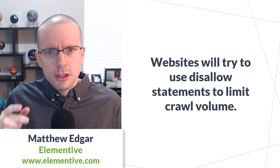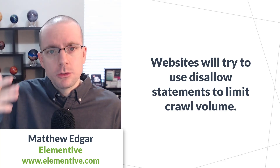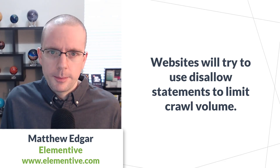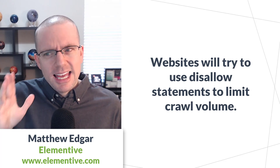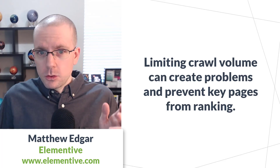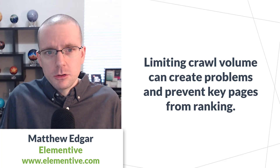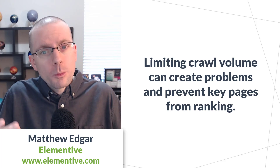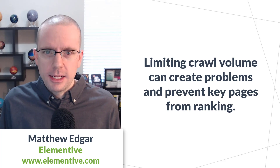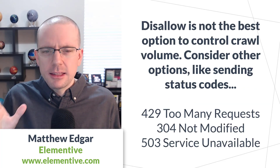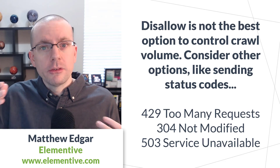Another scenario where people try to use disallows is to limit how much Google crawls certain types of files — like image or video directories — to reduce crawl volume. This can get tricky, though, because limiting those crawls can help server capacity for some technical reasons, but it can put you in a situation where Google can't access those files and can't appropriately decide how to rank your pages. In that case, you can end up losing a lot of organic traffic. The better option is to do some form of rate limiting and control Google's crawls in other ways.